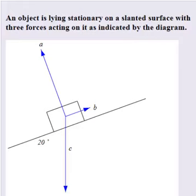An object is lying stationary on a slanted surface with three forces acting on it as indicated in the diagram. Here you can see the object on a surface. That surface is slanted and they even give us the degrees with which it is slanted.